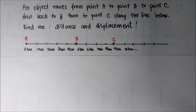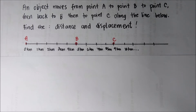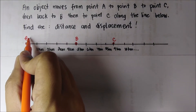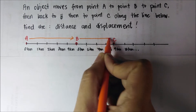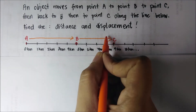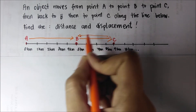Now let's have a sample problem for distance and displacement. The problem reads: an object moves from point A to point B to point C, then back to B, then to point C along the line below. Find the distance and displacement. As mentioned, distance would simply be the total distance traveled by the object. We're going to get first the distance from point A to point B, then point B to point C, then back to B, then to point C again.